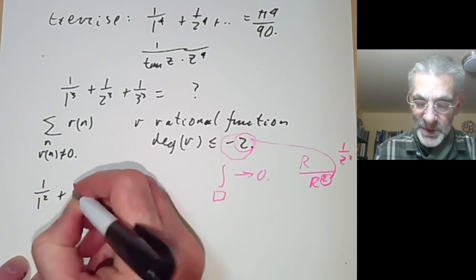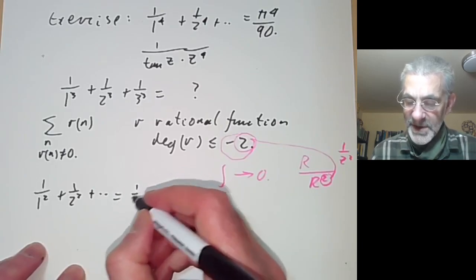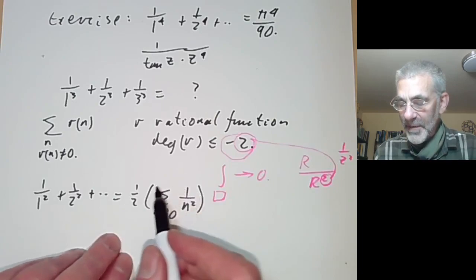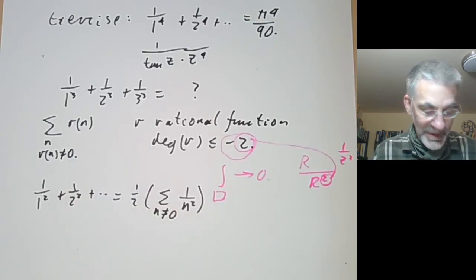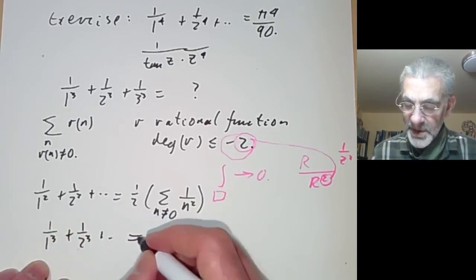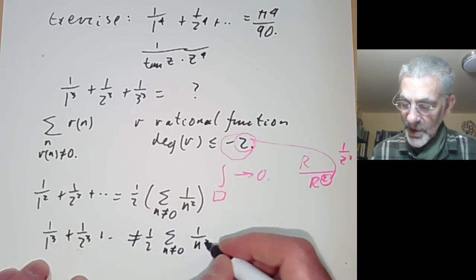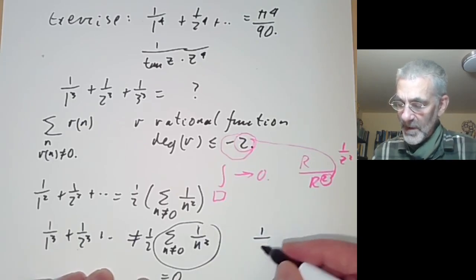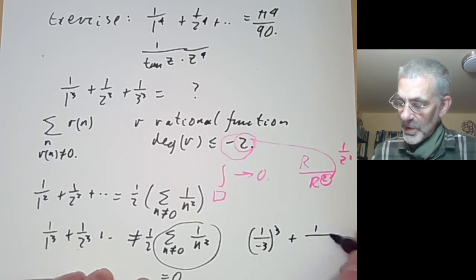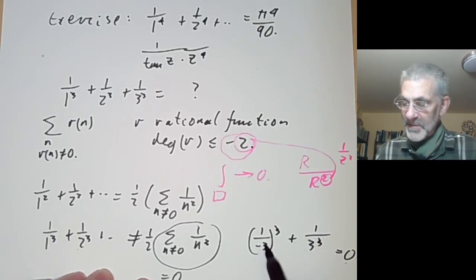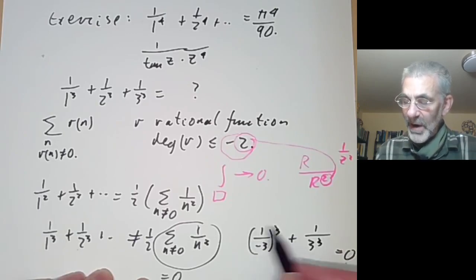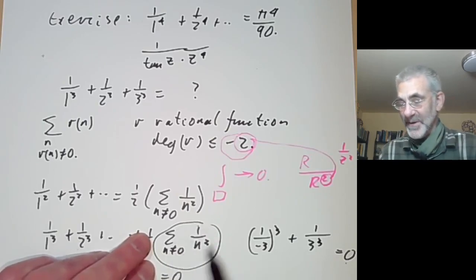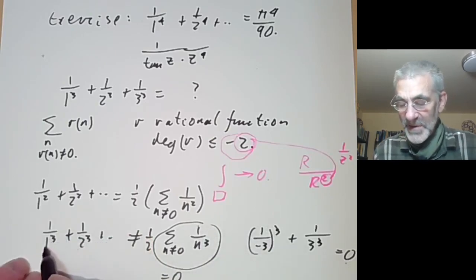For 1/1² + 1/2² + …, this is not a sum over all integers, but that doesn't matter since it equals half of the sum over n ≠ 0 of 1/n², which we can compute by residues. On the other hand, for 1/1³ + 1/2³ + …, the sum over all n ≠ 0 of 1/n³ is actually zero because the terms cancel: 1/(−n)³ = −1/n³, so positive and negative terms cancel. The residue calculus gives us zero, which is useless for finding the sum over positive integers.